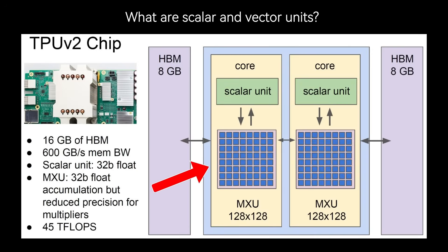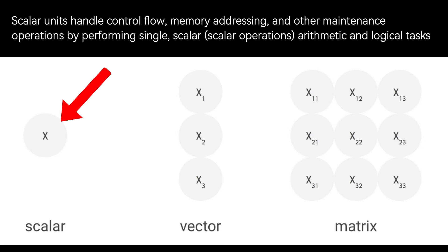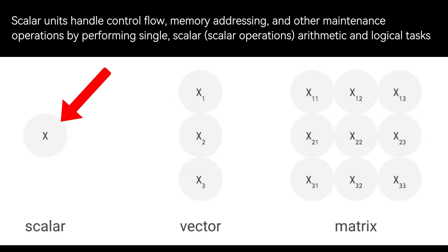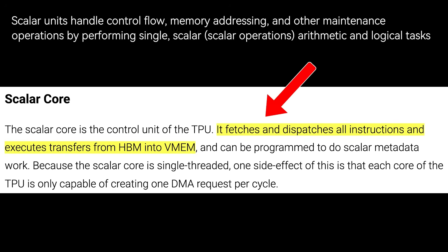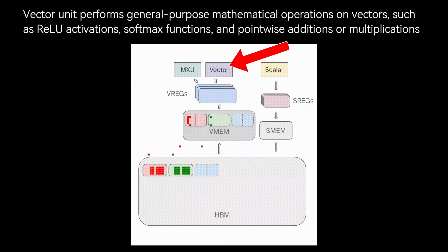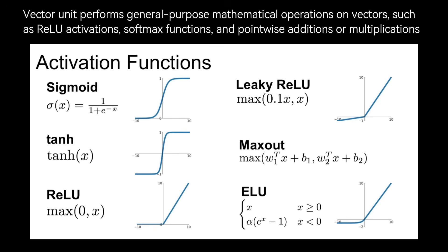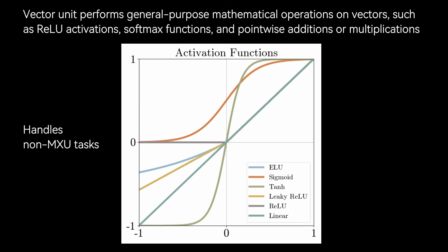While the systolic array is the TPU's core feature, it can't handle every type of operation needed in deep learning. That's where scalar and vector units come in. Scalar units handle simple single-value operations such as index calculations, loop counters, and conditional branching — critical for orchestrating execution but not performance-intensive. Think of the scalar core as the control unit of the TPU: it fetches and dispatches instructions and manages transfers from high bandwidth memory into vector memory. Vector units are designed for general mathematical operations on 1D arrays — element-wise additions, multiplications between vectors, activations like ReLU, Sigmoid, and Softmax, or layer normalization.